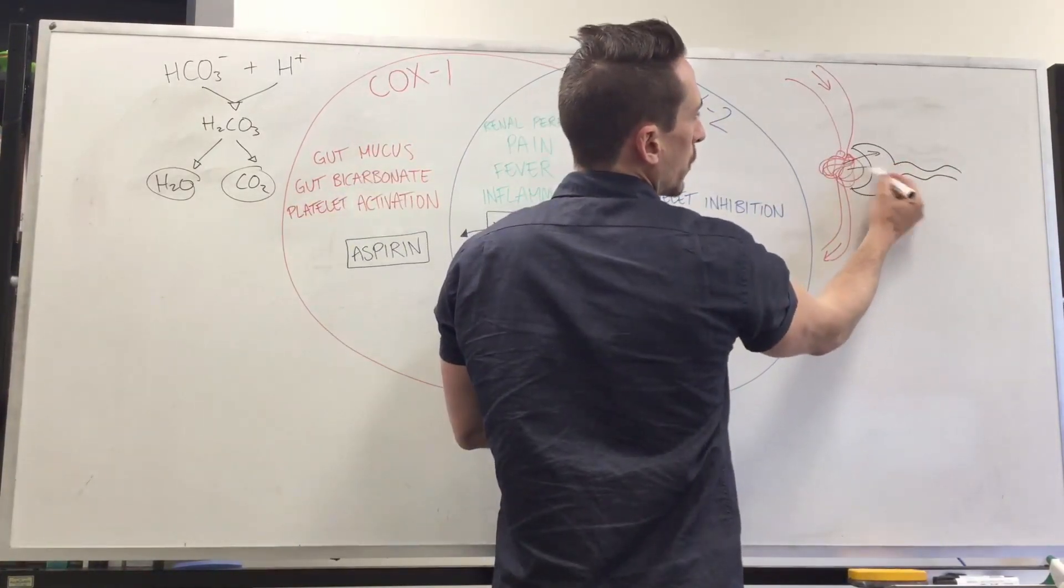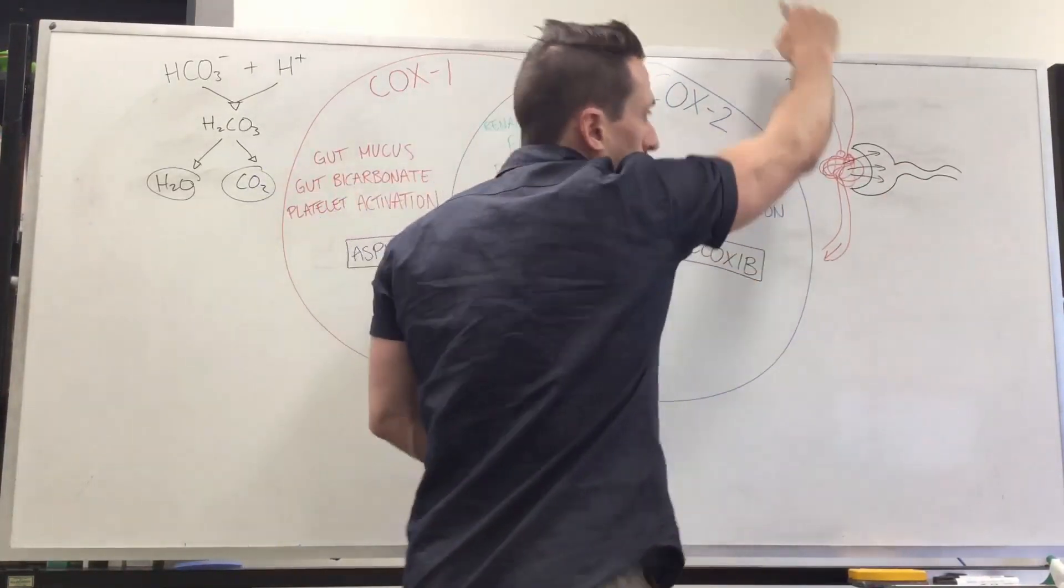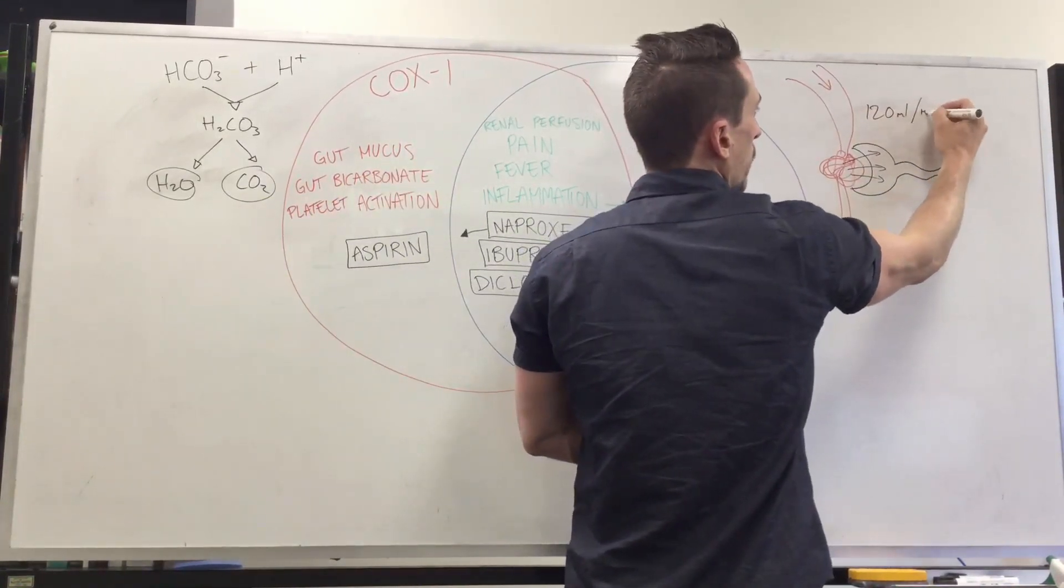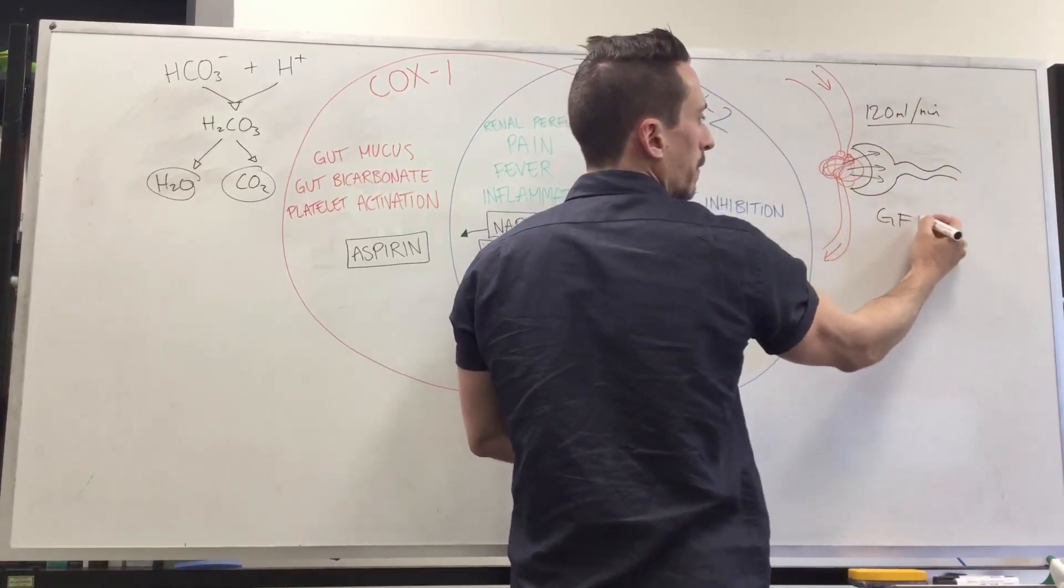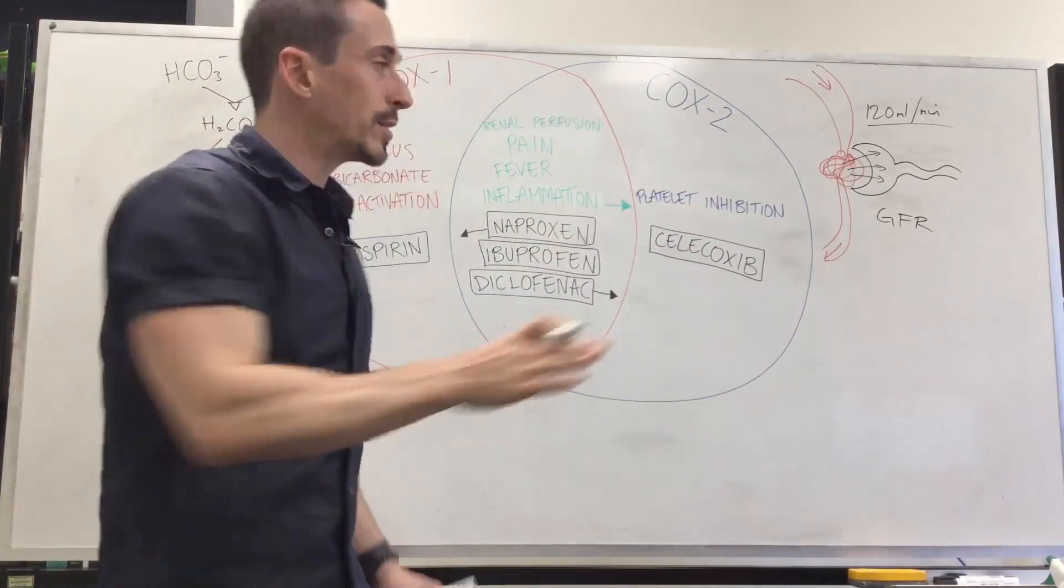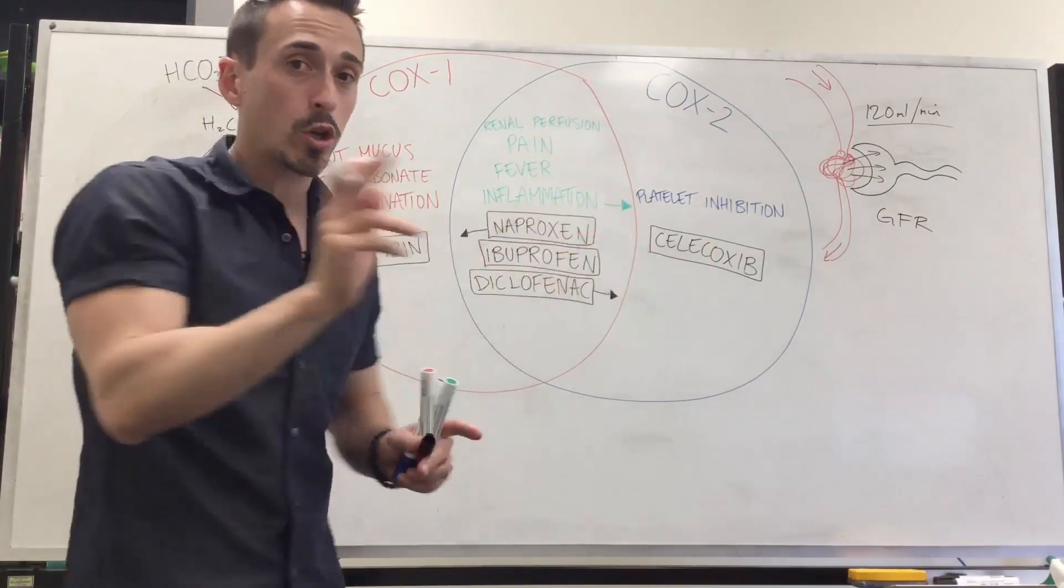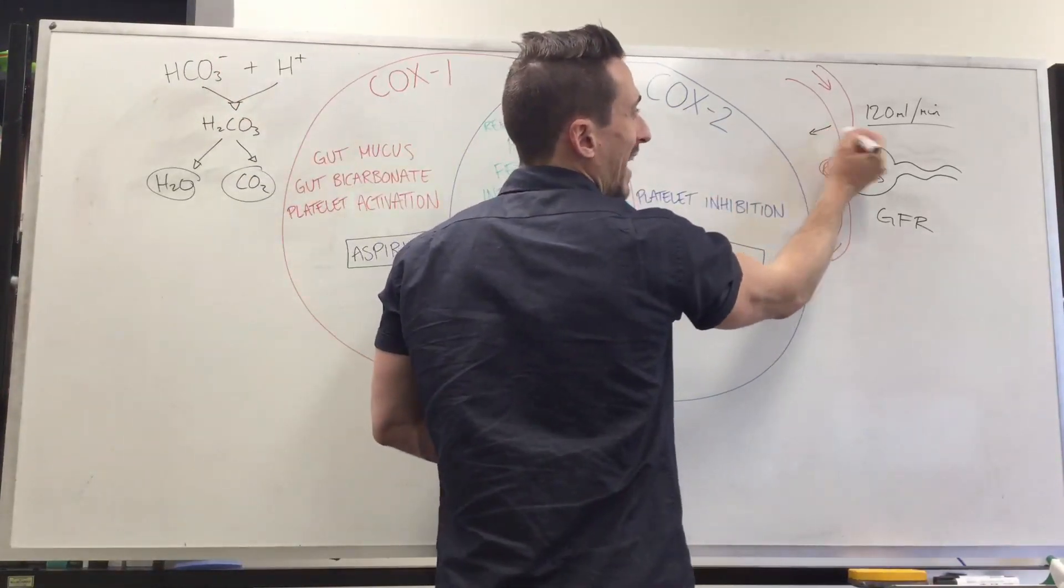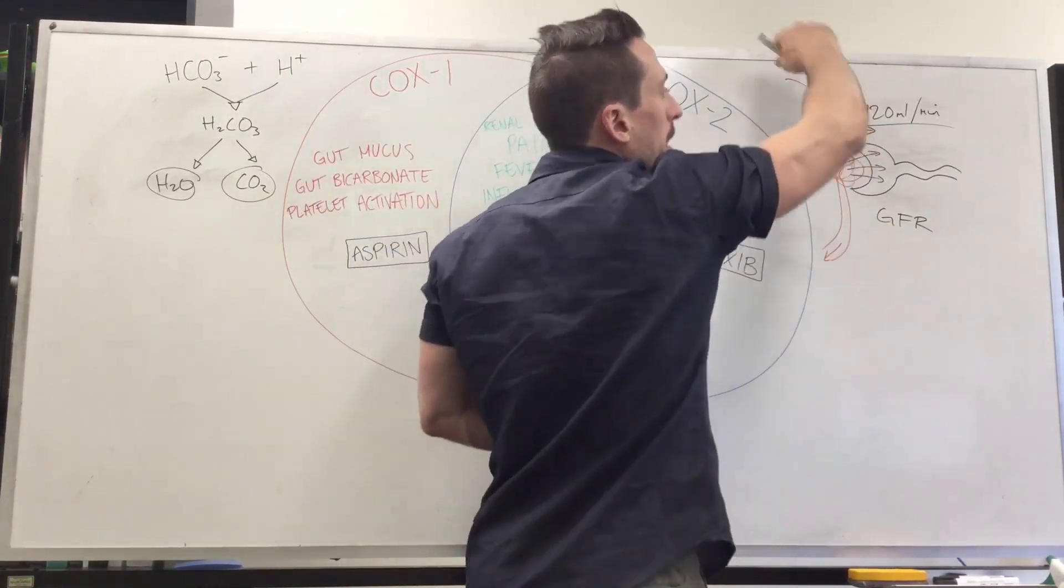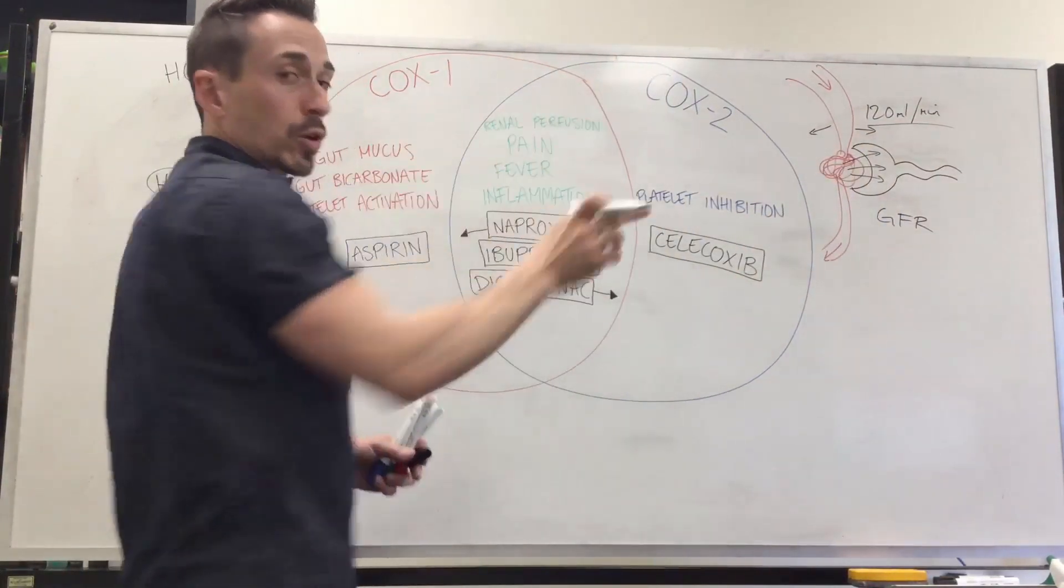This is where the blood gets filtered in the kidneys. Now this is an important point. Of the blood that's going past, we need to filter 120 milliliters per minute. This is what we term our glomerular filtration rate. We don't want it to go too high, we don't want it to go too low. One of the ways that we control this glomerular filtration rate is through prostaglandins produced by both COX-1 and COX-2. What these prostaglandins do is they dilate the afferent arteriole, meaning it allows for more blood to come through to maintain 120 milliliters per minute. That's what's so important, COX-1 and COX-2.